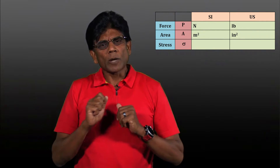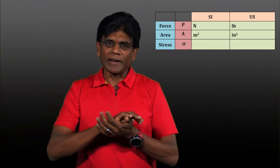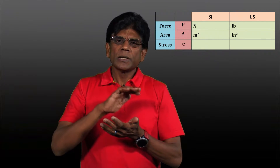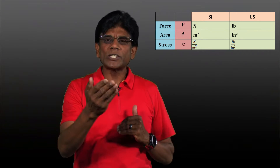Let's denote the force with the letter P, area with the letter A, and stress with the Greek letter sigma. Sigma stands for normal stress and is equal to force over area. So the unit for stress is Newton over meter squared in the SI system and pound over inch squared in the US system.